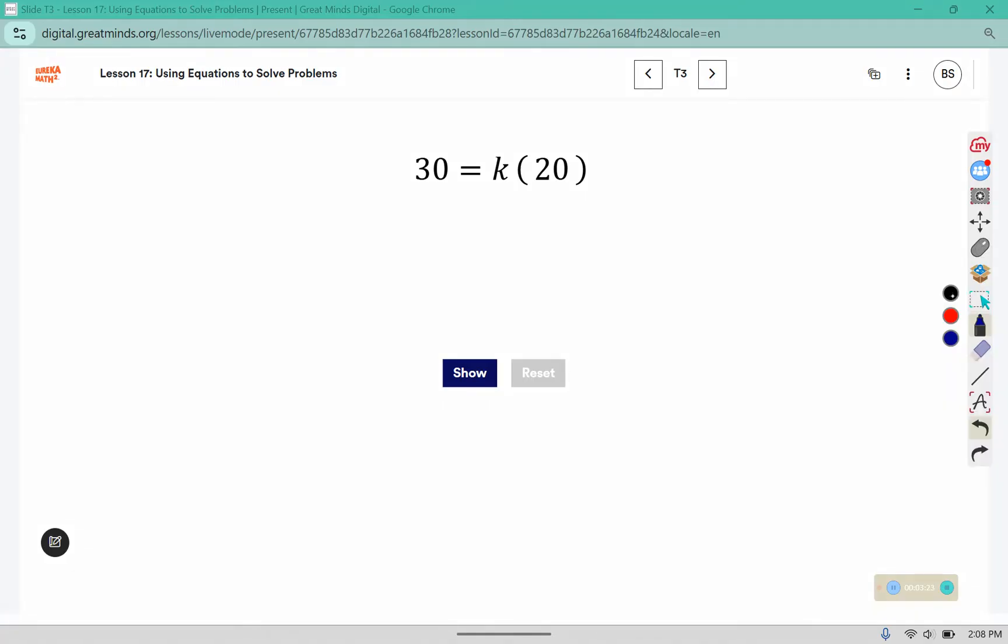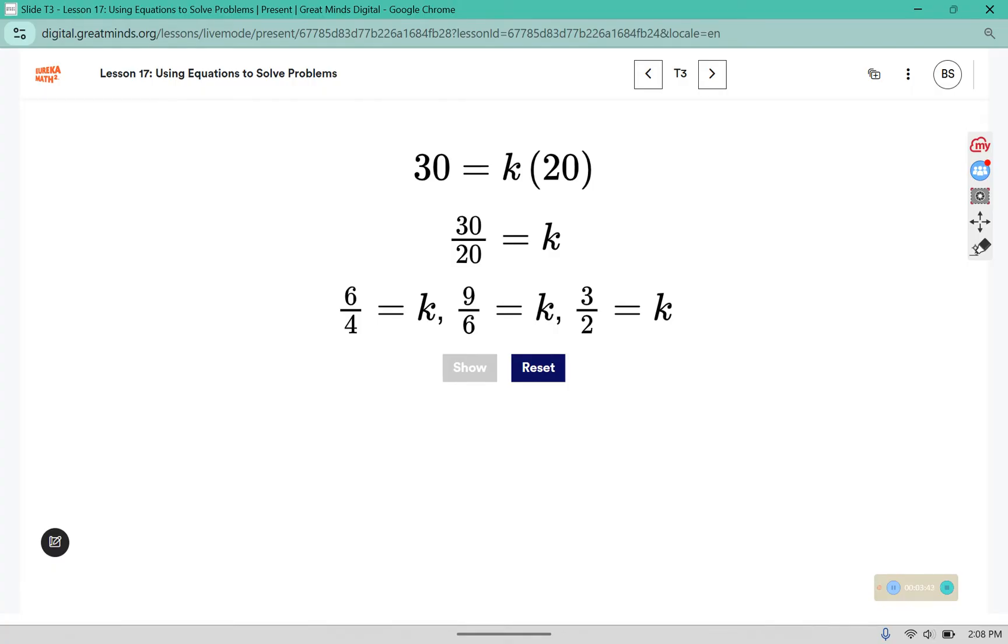If we did not know the constant of proportionality, we could use this format y equals kx, where you see they've replaced the x and y values with values from the table. Then the way that we would divide both sides by 20 to solve for k, which gives us 30 over 20, and it reduces to 1.5, which is the same value as the remaining rows in the table.